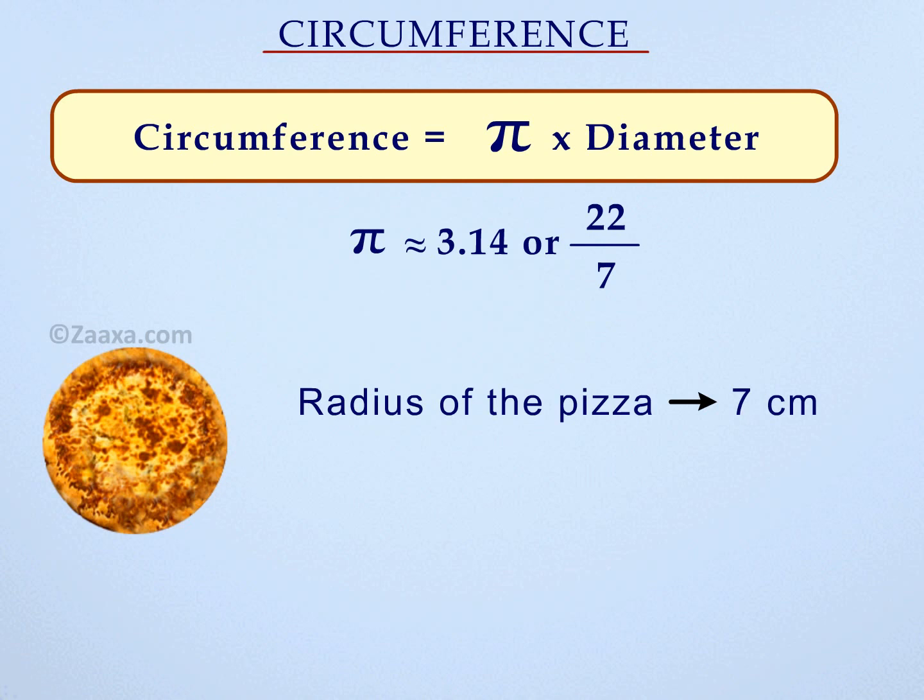Therefore, the circumference of the pizza is pi times 2 times the radius, giving us the answer 44 cm.